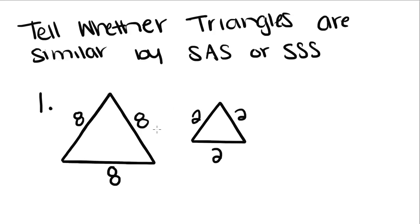For this first one, we don't know that any angles are congruent, so it can't be side-angle-side. So in order to do side-side-side, we're going to put each one of the little triangle's sides over the big triangle to see if they're all in proportion.